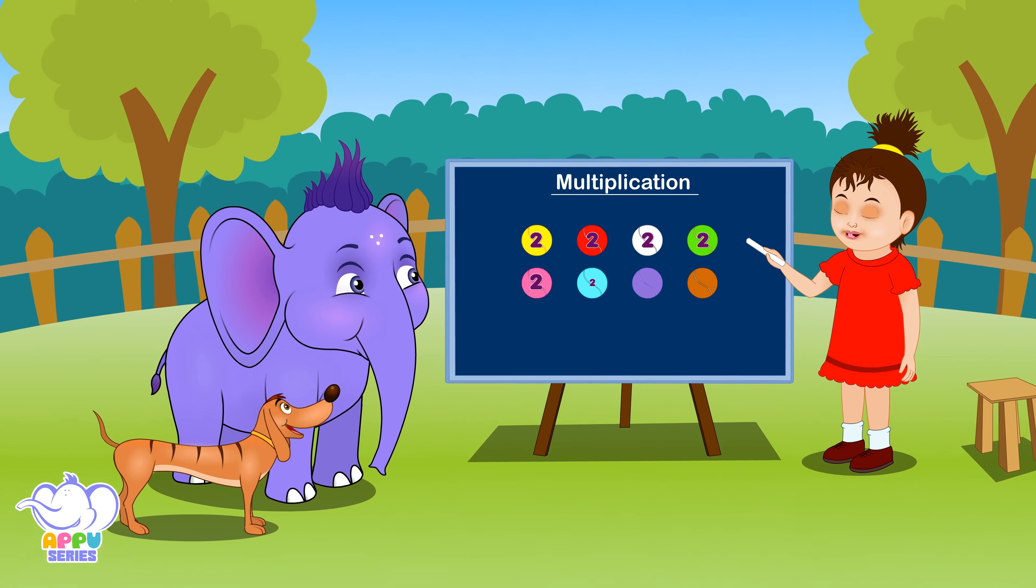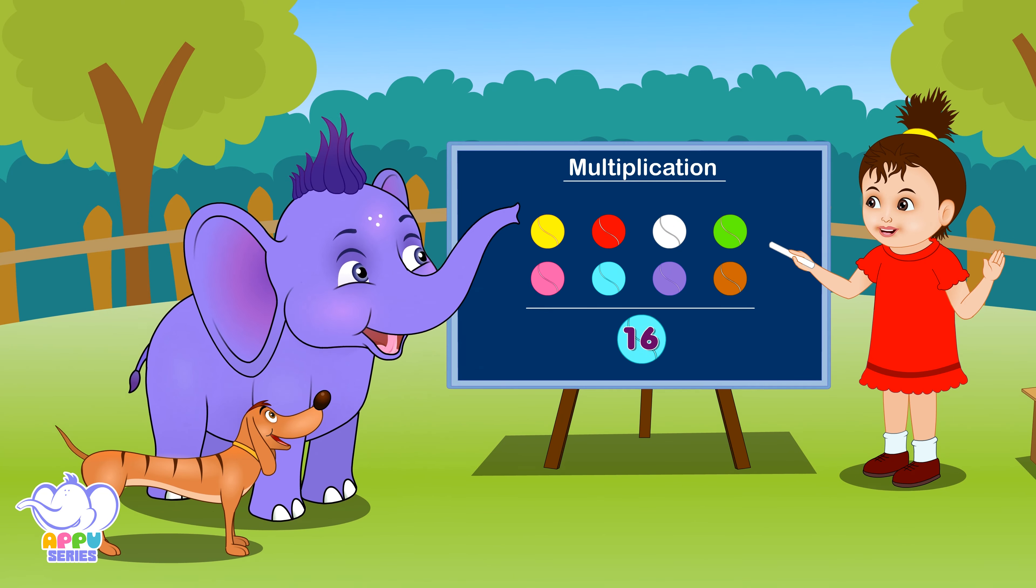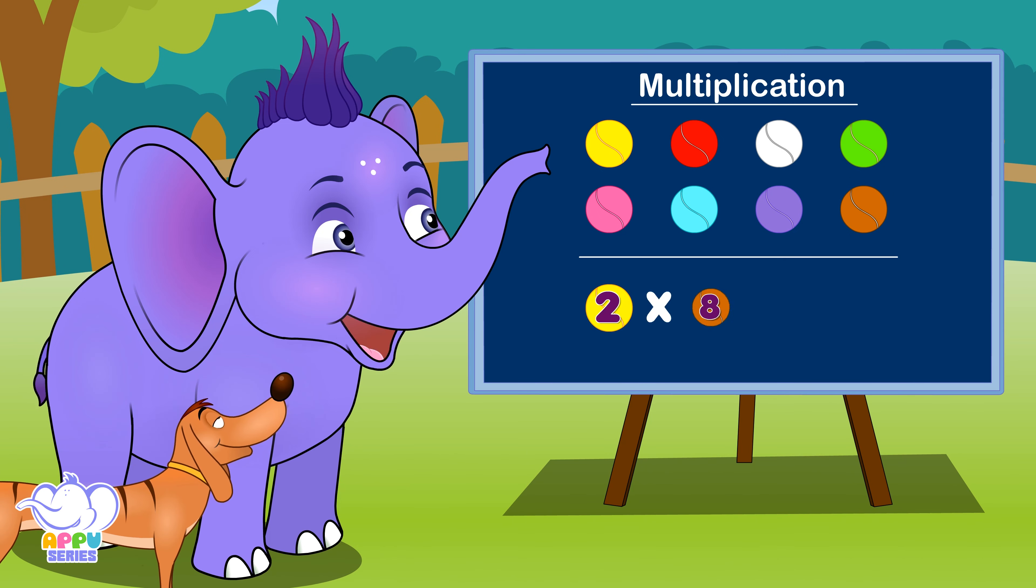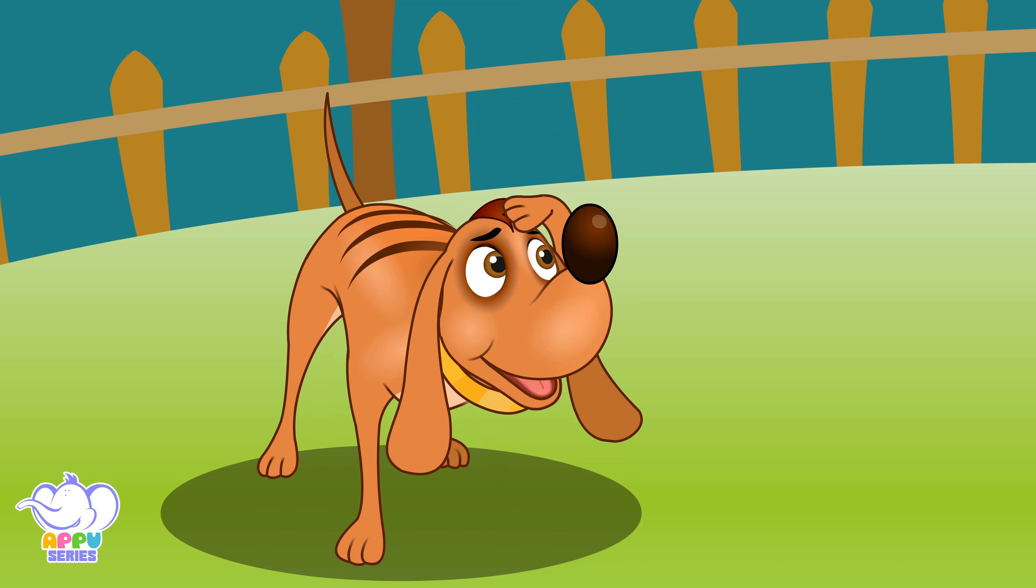We have two balls of all these eight colors. How many do we have in total? Sixteen! How did you count that fast? I worked it out through something called multiplication. It's a lot like addition. How do you do that?